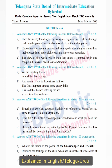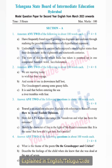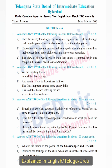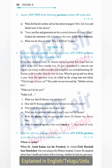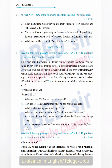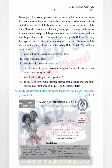In this question paper we have 3 sections. In section A, total 5 questions will be asked with internal choice and each one carries 8 marks. Next, in section B, total 4 questions will be asked with internal choice and each one carries 4 marks.